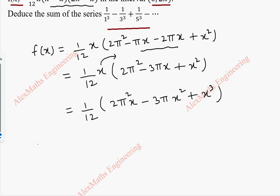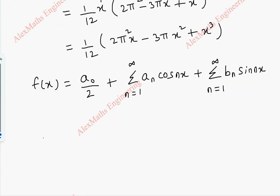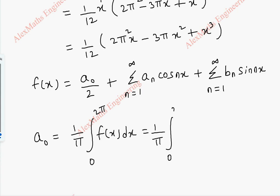The Fourier series formula is f(x) = a₀/2 + Σ aₙ cos(nx) + Σ bₙ sin(nx). The formula for a₀ is (1/π) ∫₀²π f(x) dx, so this becomes (1/π) ∫₀²π (1/12)(2π²x - 3πx² + x³) dx.